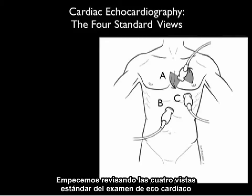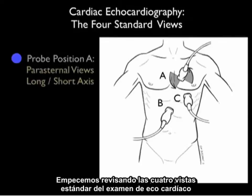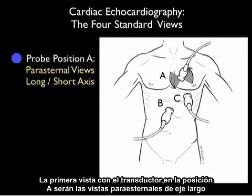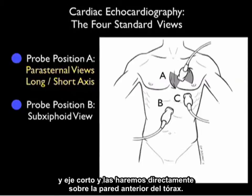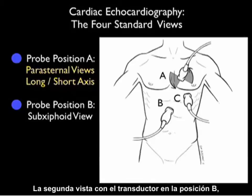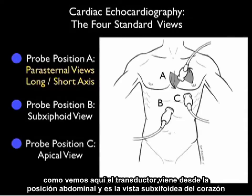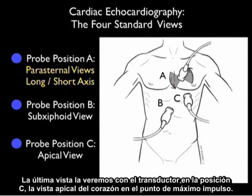Let's begin by reviewing the four standard views of the cardiac echo exam. The first view, as shown in probe position A, is the parasternal views, both long and short axis planes, and this is going to be performed directly on the anterior chest wall. The second view is where probe position B is shown here, coming from the abdominal position or the subxiphoid view of the heart. The last view is going to be shown by probe position C, the apical view of the heart at the point of maximal impulse.